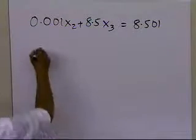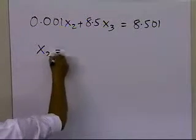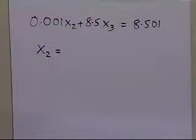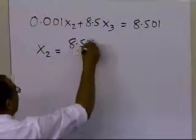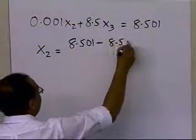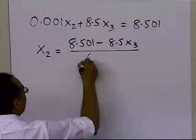So when I'm going to write down this equation the way it's algorithmically solved by using back substitution, it will be like this: x2 = (8.501 minus 8.5 x3) divided by 0.001.